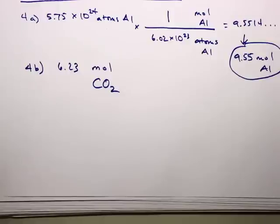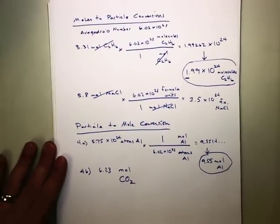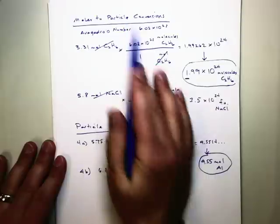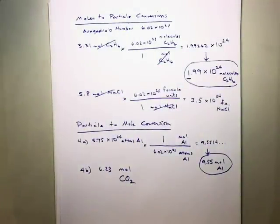6.23 moles winds up being the answer. You got it? Good. All right. Is this okay so far? So this is two of the types of problems. We got moles. Moles to particle conversions and then particle to mole conversions. All right. Two down. Two to go today.